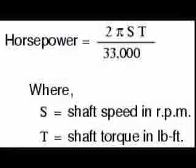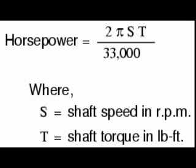The equation for shaft horsepower is: 2 times pi, or 6.28, multiplied by s — the shaft speed in rotations per minute — multiplied by the torque in pound-feet, all divided by 33,000. Notice how there are only two variable terms on the right side of the equation, s and t. All the other terms on that side are constant: 2, pi, and 33,000 are all constants. They do not change in value.